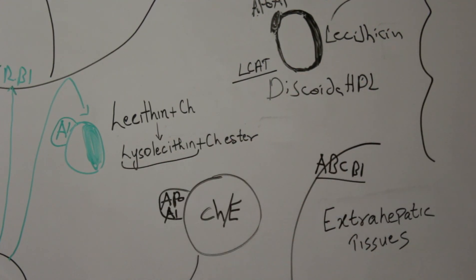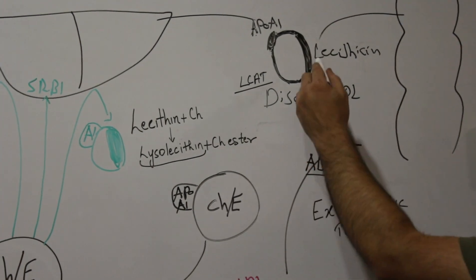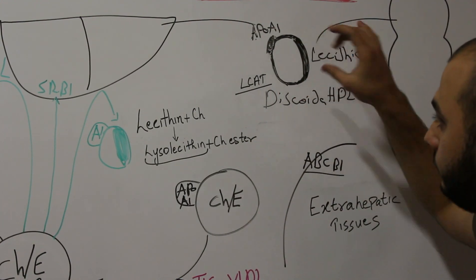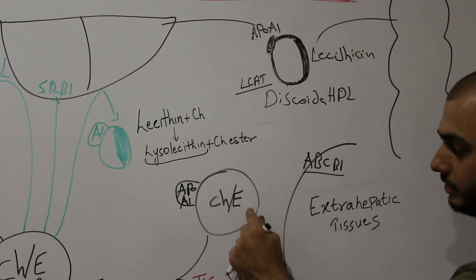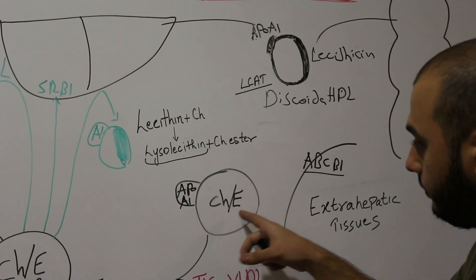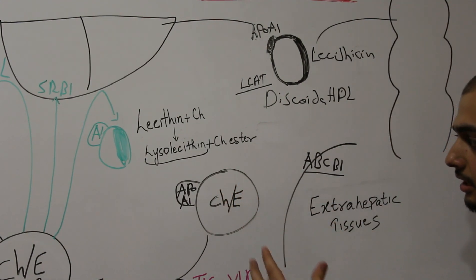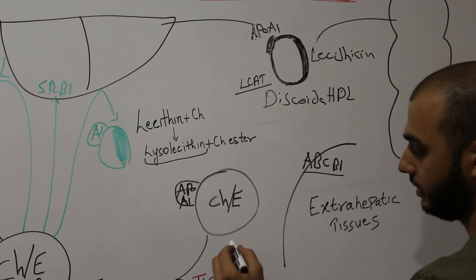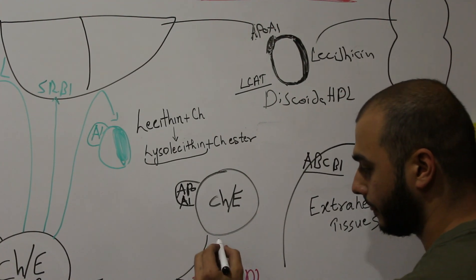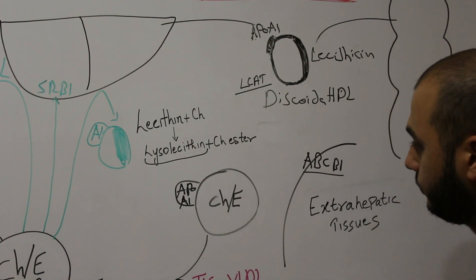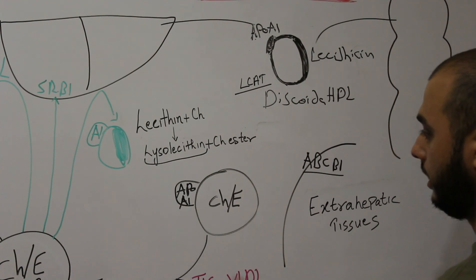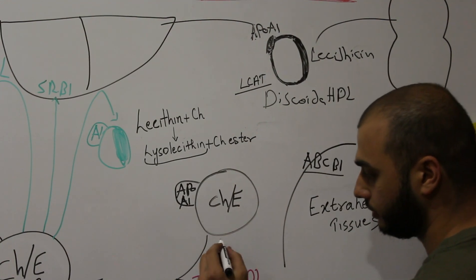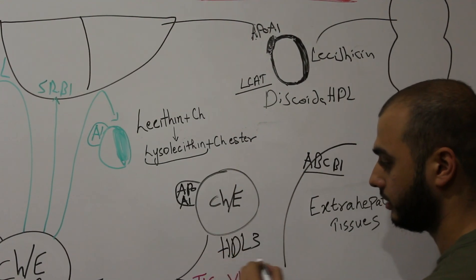Whenever lysolecithin is formed, it will be released into the blood and will not remain attached to the cortex. So the cortex will become thinner over time, while the content inside will increase. This HDL becomes a spherical HDL — because it is filling with cholesterol and has a thinner cortex — and we call this form HDL3.